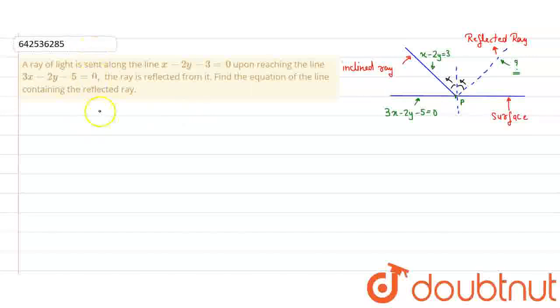We have 3x minus 2y equal to 5 and x minus 2y equal to 3. We will subtract equation 1 from equation 2. We will get x equal to 1. When we put the value of x in one of these equations, we will get the value of y.